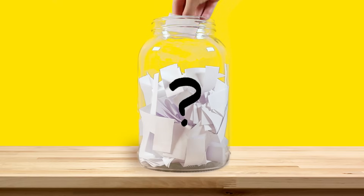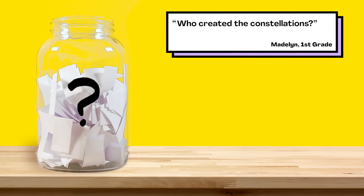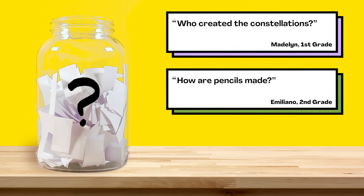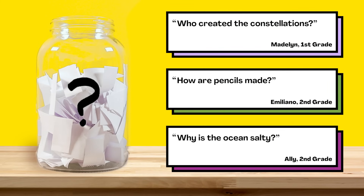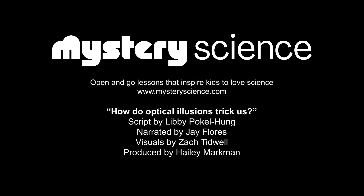You can vote on which one you think we should send out next week. You can choose from: who created the constellations, how are pencils made, or why is the ocean salty. Submit your vote when the video is over — we want to hear from all of you watching. There are mysteries all around us. Stay curious and see you next week.